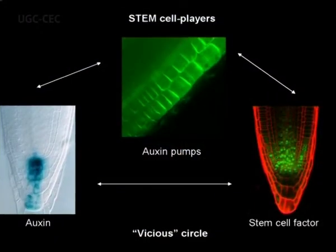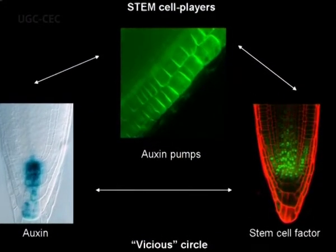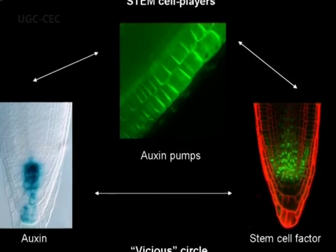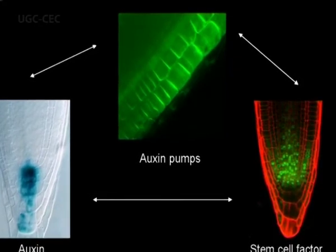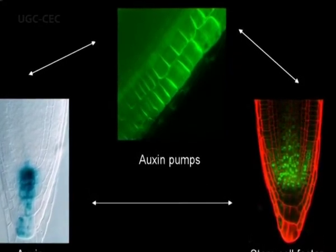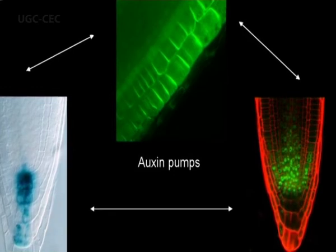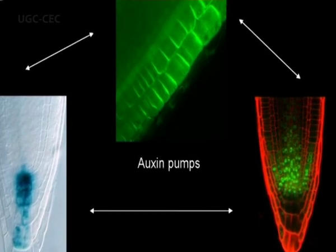There are a number of important advantages in using plants for the study of cell patterning and cell polarization. Plants have meristematic regions which continue their embryonic development, forming new organs and tissues as long as the plant is alive.